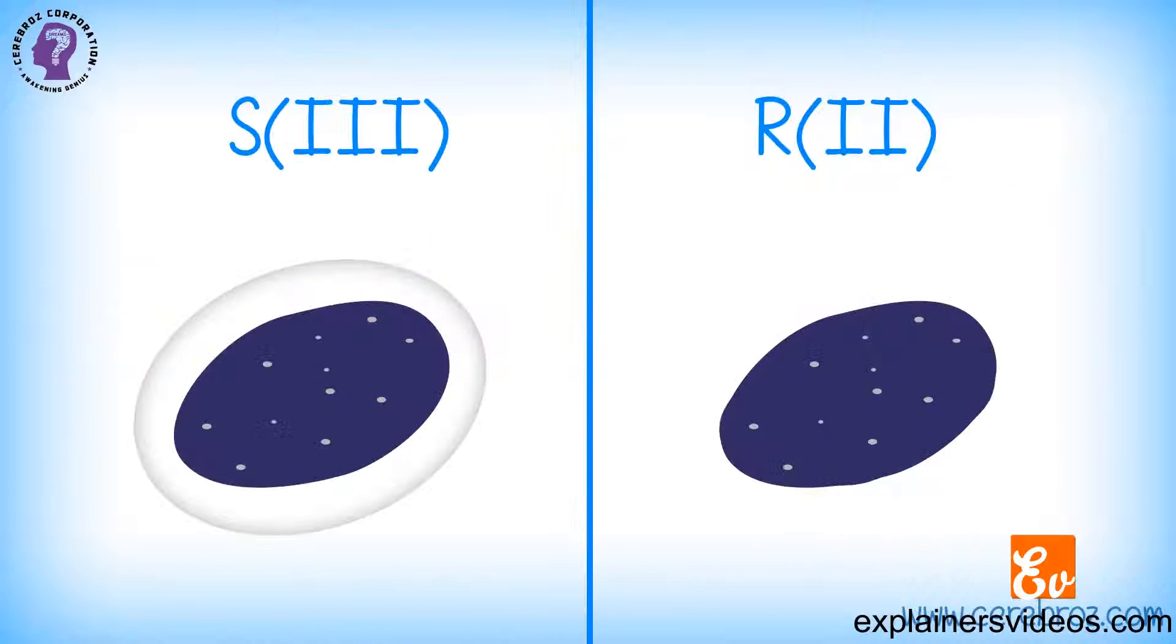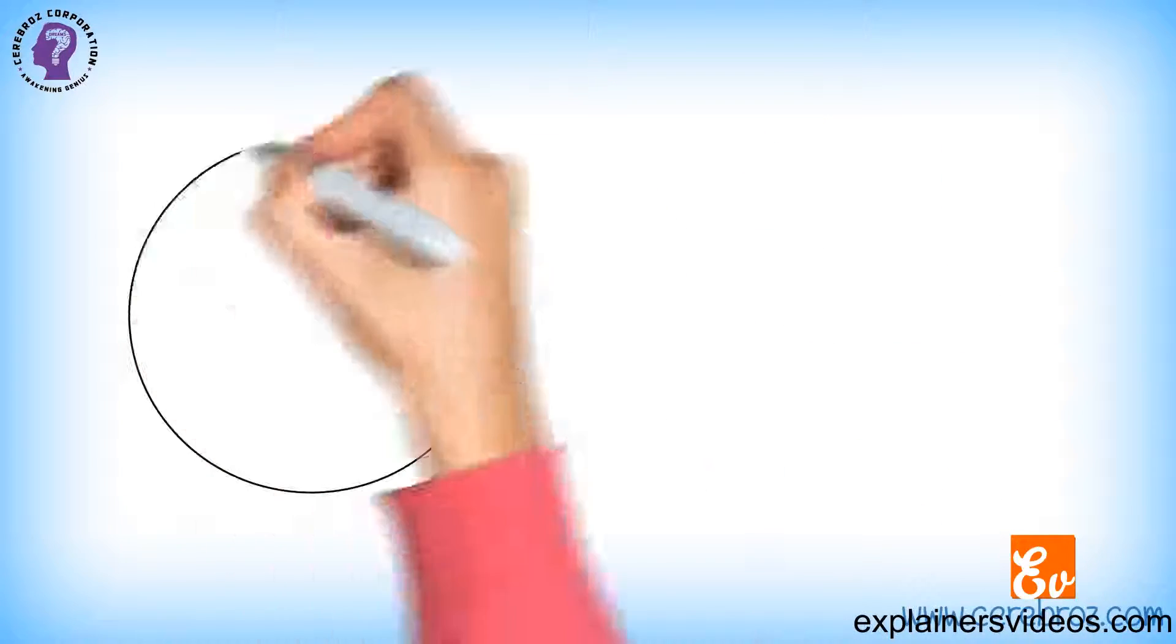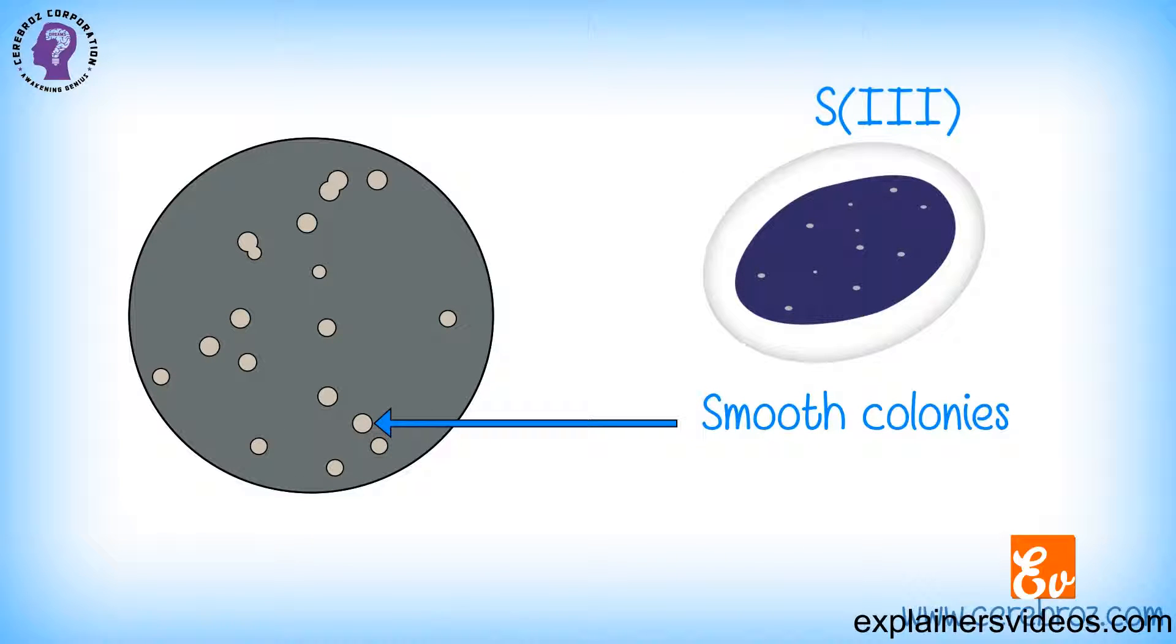Griffith's experiment. Griffith took two strains of pneumococcus bacteria. S3, which have smooth polysaccharide capsules, giving smooth colonies S, and it's virulent, causing pneumonia.